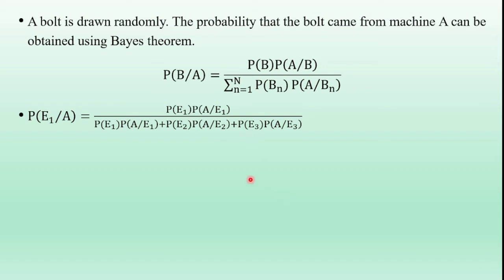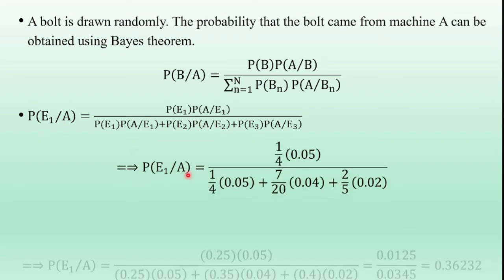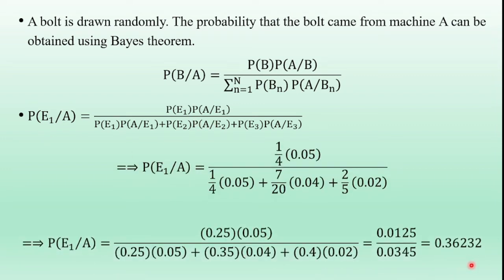From the given data, substituting all values of P(E1), P(E2), P(E3), P(A|E1), P(A|E2), and P(A|E3) into the equation and simplifying the right-hand side, we get P(E1|A) = 0.3623.